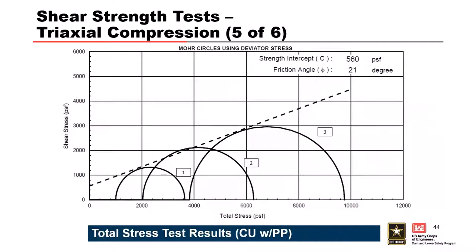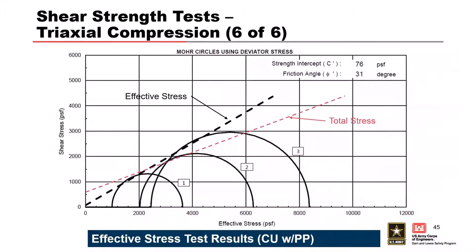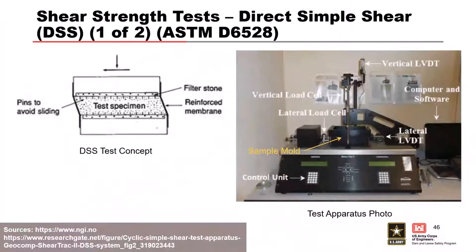The consolidated-undrained test with pore pressure measurements gives you both the total stress envelope and the effective stress envelope. The effective stress envelope is always steeper and has lower cohesion, because subtracting pore pressure shifts the Mohr circles to the left. This is the most commonly used test for embankment stability analyses.